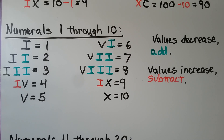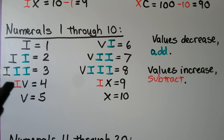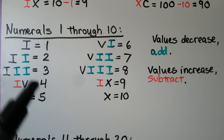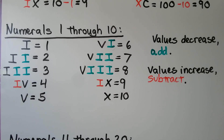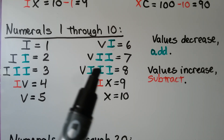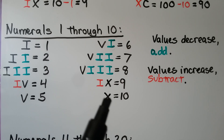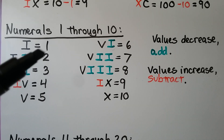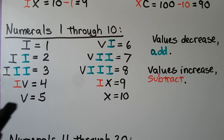For the numerals 1 through 10: we start with I for 1, II for 2, III for 3, then IV — which is 5 minus 1 — for 4, then V for 5. Then VI, which is 5 plus 1, equals 6; 5 plus 2 is 7; 5 plus 3 is 8. Then IX — 10 minus 1 — for 9, and X for 10. As the values decrease, we add. When the values increase — going from a 1 to a 5 — we subtract.